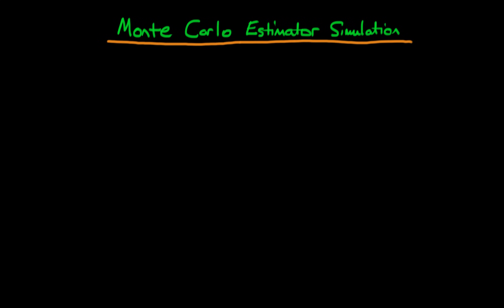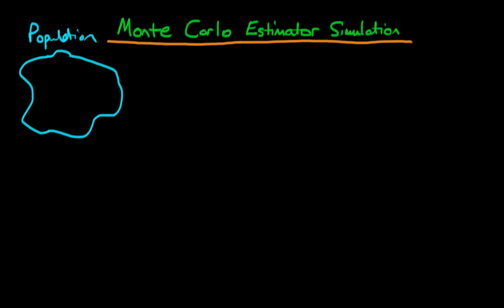In this video I'm going to talk about how we can use Monte Carlo simulations in order to examine the properties of estimators. In econometrics, what we normally are dealing with is a population, and within that population we suppose there is some sort of population process. For example, yi is equal to alpha plus beta xi plus some error epsilon i, where epsilon i might be normally distributed with a mean of zero and a variance of sigma squared.